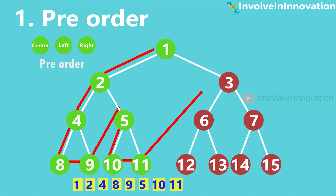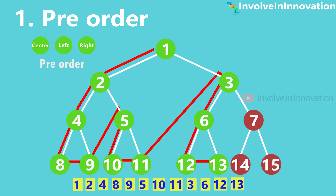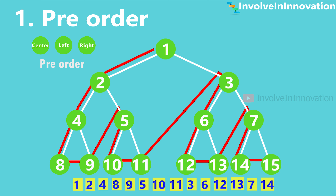Now we move to the right subtree. The root node of the right subtree is 3, then node 6, then its left node 12, then right node 13 — completing the left subtree of node 3. Then the right subtree of node 3: root node 7, left node 14, right node 15. Now we have done the pre-order traversal. The pre-order traversal of this tree is: 1, 2, 4, 8, 9, 5, 10, 11, 3, 6, 12, 13, 7, 14, 15.